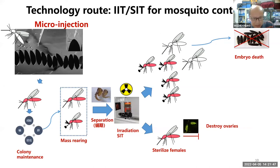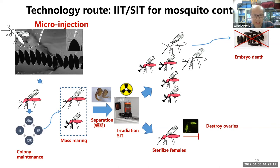We then use irradiation to sterilize any remaining females. These irradiated females cannot produce a new generation — the eggs cannot hatch. The purified males infected with Wolbachia are then released to mate with wild females. Because of the CI effect, the new eggs cannot hatch, and using this combined approach we achieve the best effectiveness in controlling mosquitoes.